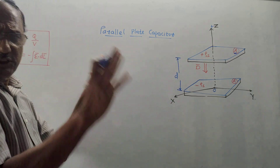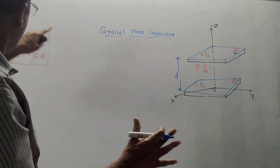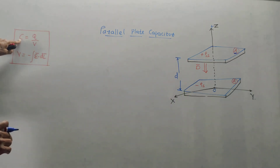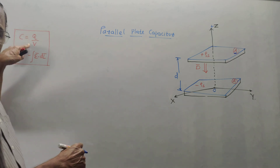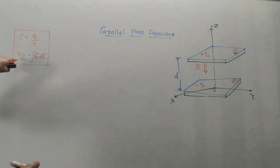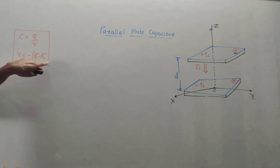To derive the expression for capacitance, we need two basic formulas. The value of capacitance is C = Q/V, where Q is the total charge and V is the voltage difference. The formula for voltage difference is V = minus the integral of E-bar dot dL-bar.